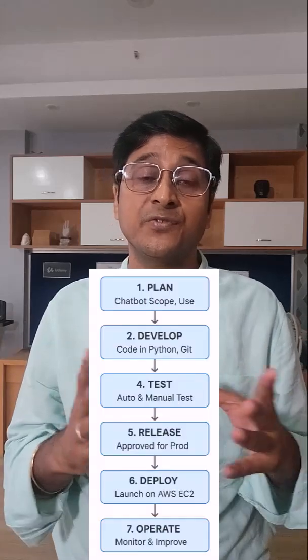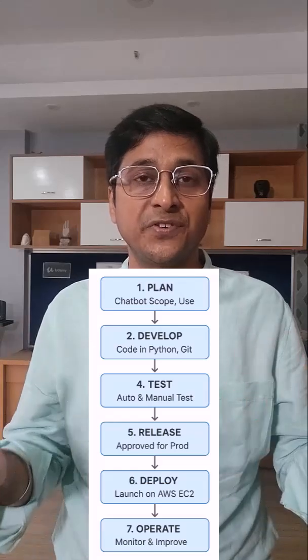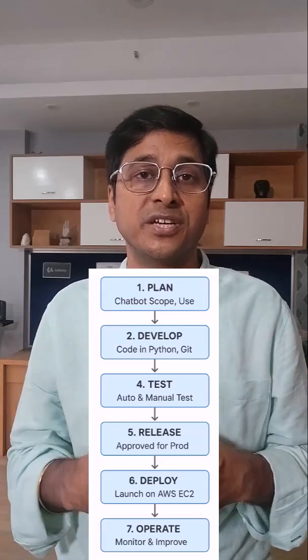Hi, let's understand the DevOps lifecycle — 7 phases in simple, easy words with a real-time example. Let's imagine my company has just received an exciting new project from a client to develop a Python-based AI chatbot for customer support. The chatbot needs to be intelligent, responsive, and reliable 24x7. To ensure rapid delivery, consistent updates, and high-quality performance, we will follow the DevOps lifecycle, which consists of 7 key phases. Let's walk through each phase using our chatbot project as an example.